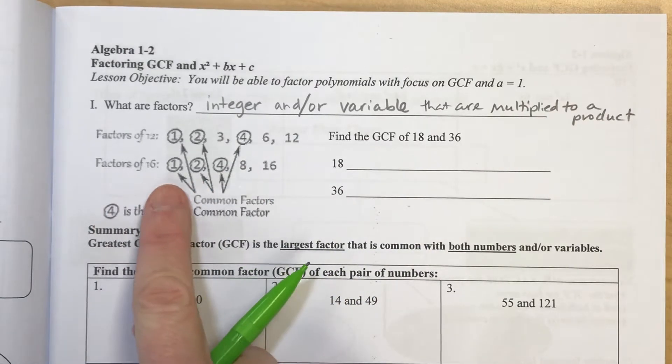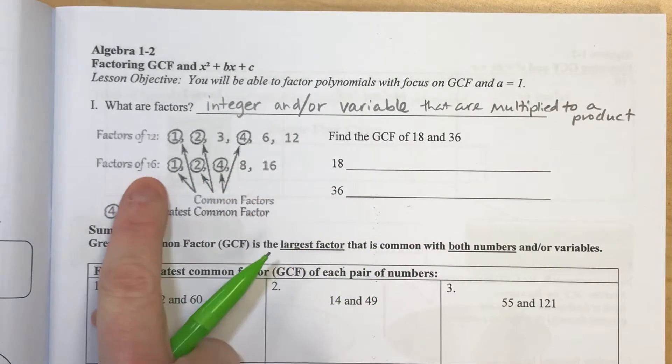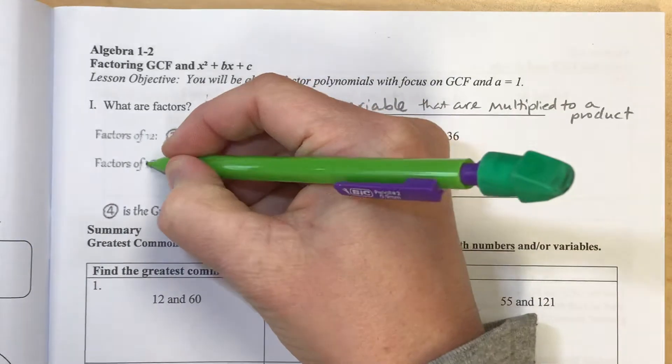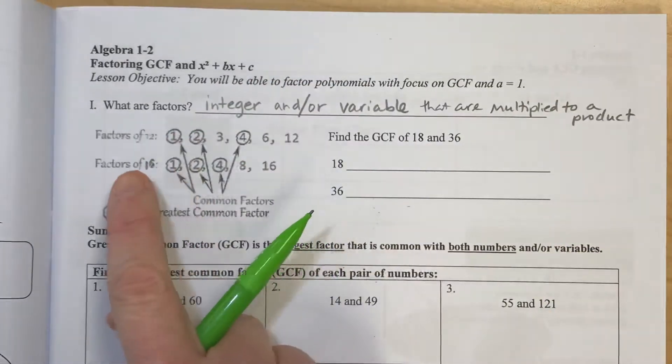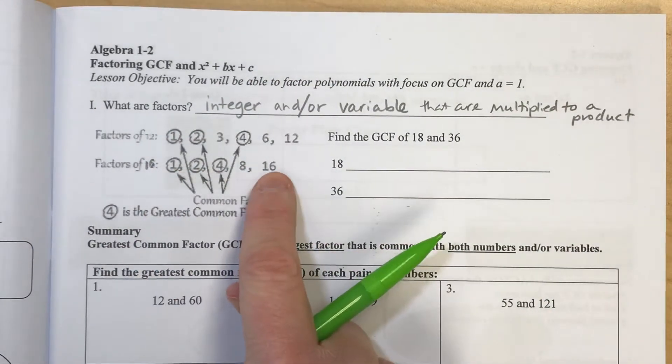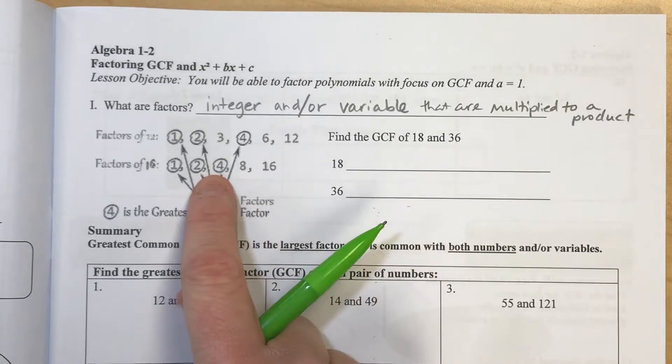And then factors of 16 would be 1 and 16. Actually, that says 16, I couldn't see that 1 there. Factors of 1 and 16 would be 1 and 16, 2 and 8, and 4 times 4.